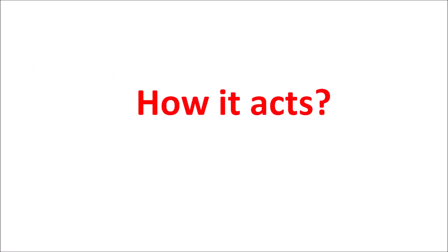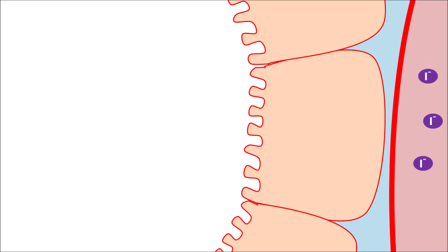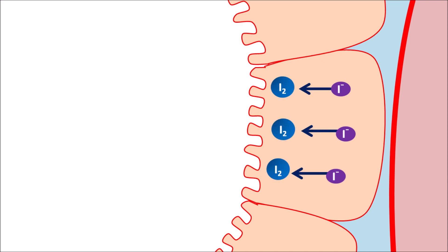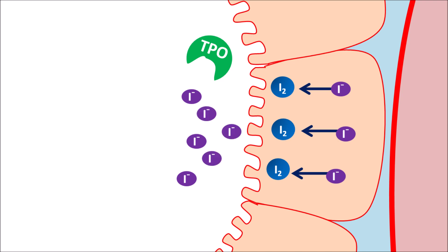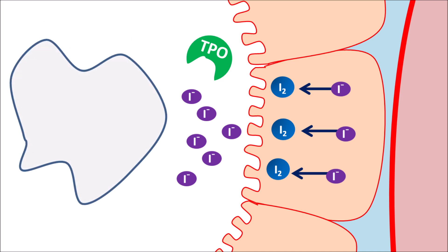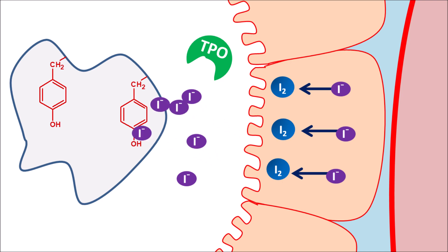Now let us see how this drug acts within the thyroid follicles. Systemic circulation supplies iodide molecules that enter thyroid follicular cells, where they are converted into iodine molecules by peroxidase enzyme activity. The enzyme tyroperoxidase then releases iodide molecules from iodine. Tyroperoxidase has multiple enzymatic activities — it can convert iodine molecules back to iodide, increasing iodide levels within the colloid, which then targets thyroglobulin expressed with tyrosine residues. These tyrosine residues are iodinated by tyroperoxidase.